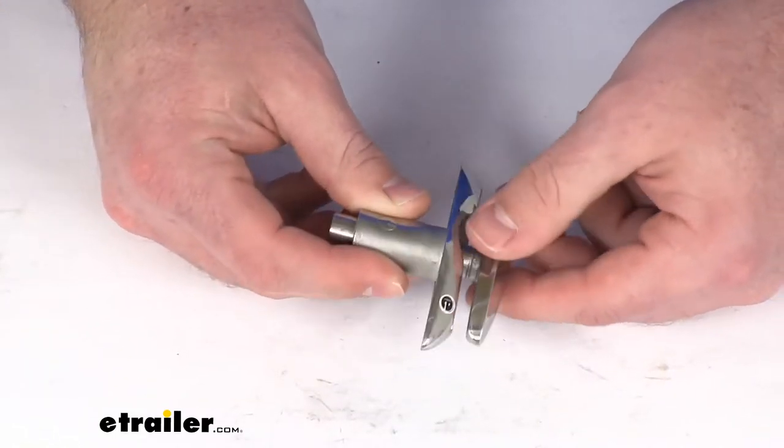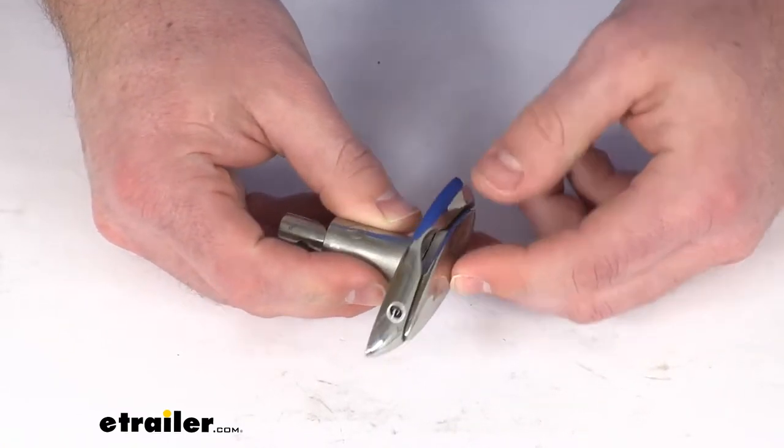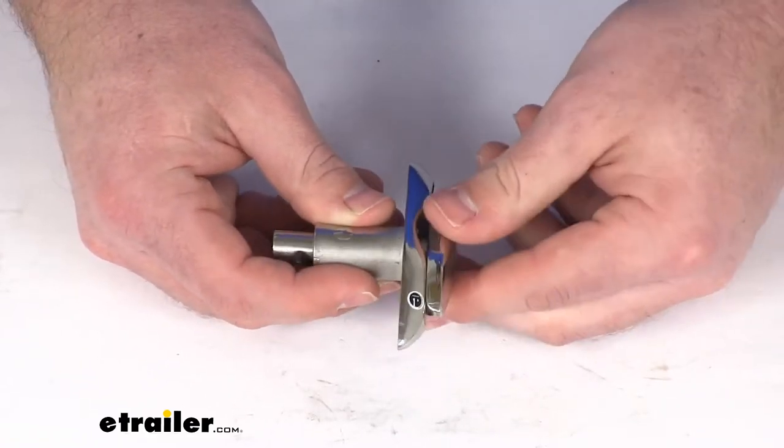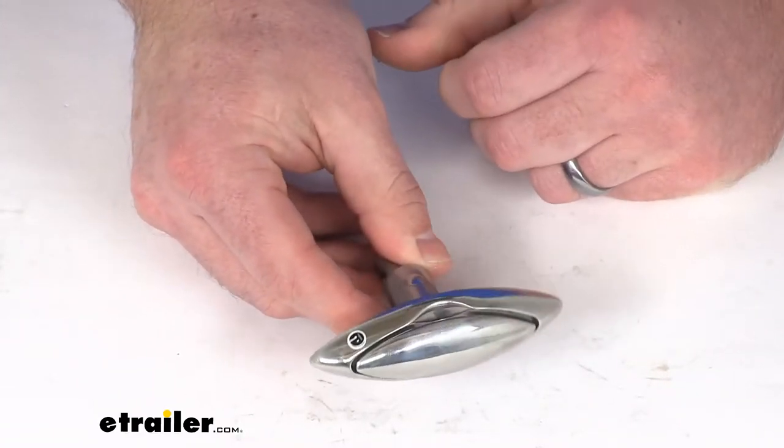This is a fender cleat that's going to provide an attachment point so you can hang your boat's fender. This can also be used to tie a rope or hook a strap in place so that you can easily hook up your boat to the dock.